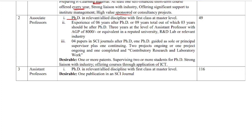For Associate Professor, a PhD with first class at Master's level is required. You should have 6 years of experience after PhD and a total of 9 years overall. At least 3 years must be at the Assistant Professor level with a GP of 8000 or equivalent. Research and development or relevant industry experience is required. Four papers in SCI journals must be published after PhD, and you must have guided one PhD student as sole or principal supervisor, plus have two ongoing or one completed research project.